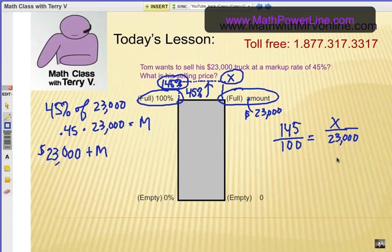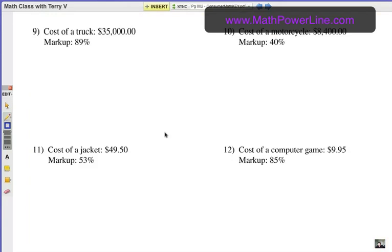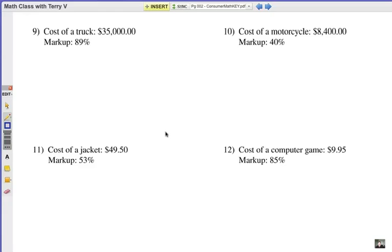Grab a piece of paper and a calculator, and let's try these problems. Numbers 9 through 12, they give you the cost of the original item and the markup. So the question is, what is your selling price?